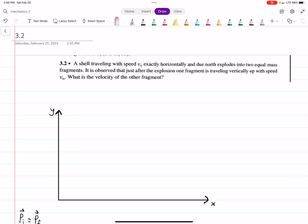This is problem 3.2 out of Taylor's Mechanics. A shell traveling with speed V0 explodes into two equal mass fragments. The goal is to find the velocity of one of the fragments if we know one of them traveled vertically up with speed V0.